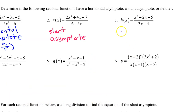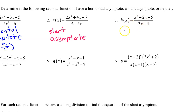Number three: the numerator has degree three, the denominator has degree one. Since the degree is greater, there is no horizontal asymptote. Since it's not exactly one more, there's not a slant asymptote either. So this is a neither.